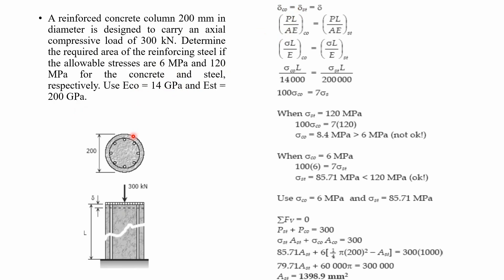When a composite bar is subjected to a constant load, it expands or contracts as a whole, so elongation in both materials is equal. Using delta L equals PL/AE for both concrete and steel and equating them: stress times L divided by E for concrete equals stress times L divided by E for steel. Since length cancels, and using E_concrete equals 14 GPa and E_steel equals 200 GPa, we obtain the relation: 100 times sigma_concrete equals 7 times sigma_steel.